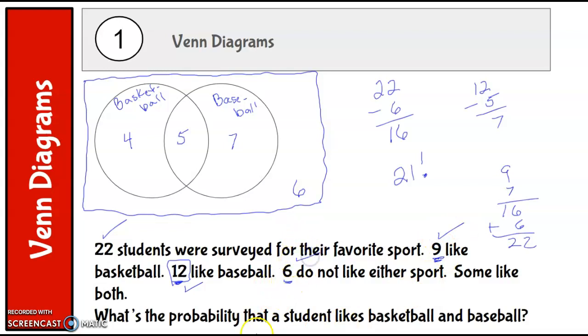So what's the probability that a student likes basketball and baseball? Well, the favorable outcome - there are 5 here out of the total number of students surveyed which is 22. So the probability is 5 out of 22.